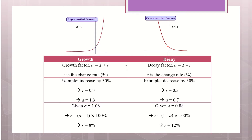The growth factor is always 1 plus r. When something is growing, it's more than 100%, so if the increase is 30%, r is 0.3 and A is 1.3. If A is 1.08, the rate of increase is 8%. The decay factor is A equals to 1 minus r — decay is reducing, so it will be less than 1. If the decrease is 30%, r is 0.3 and A is 0.7. If A is 0.88, it's a 12% decrease.